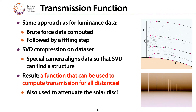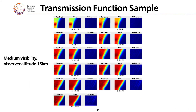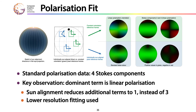We also provide a transmission function — again, brute force data computed, then a fitting step — where SVD (not CPD) can find a structure in the data, and the output is a function that can be used to compute transmission for all distances. There's also the polarization channel: we manage to reduce the three polarization components of the four Stokes components to a single one, because the dominant feature of sky domes is linear polarization caused by Rayleigh scattering in the first order, and in a specialized coordinate system you get away with essentially only using the first component. This allows two-component Stokes images.